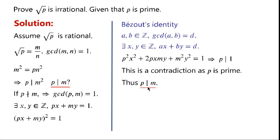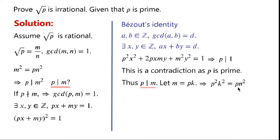So there exists k, which is an integer, such that m equals pk. Now, square both sides. Since we know that m squared equals pn squared, we can write p squared k squared equals pn squared. We can see that p on the left-hand side and on the right-hand side cancel, so we can write pk squared equals n squared. From this, we can see that p divides n squared.